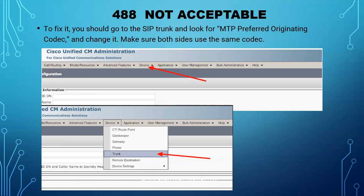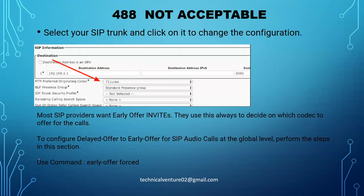Now you need to check on your CCM whether it is sending the same codec. To fix that, go to the SIP trunk and look for 'MTP Preferred Originating Codec.' Log into your CCM, go to Device, then Trunk, select your SIP trunk, and scroll down to check the MTP Preferred Originating Codec setting. Here you can see it is set to G.711 Mu-law — so there's a conflict since it's not using the same codec. You can go and change it to match.